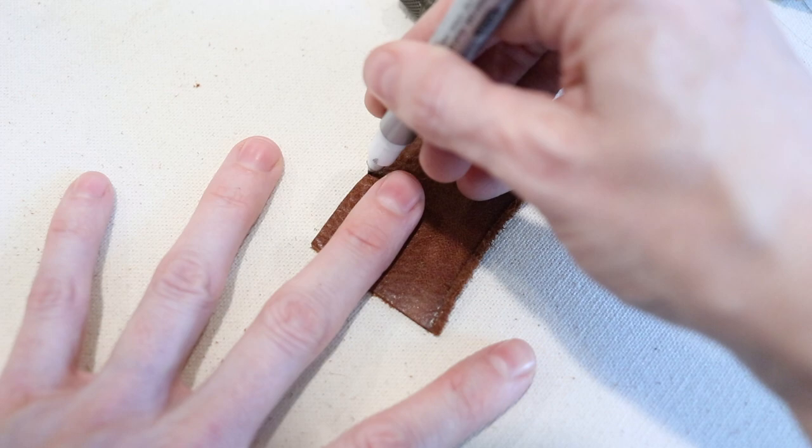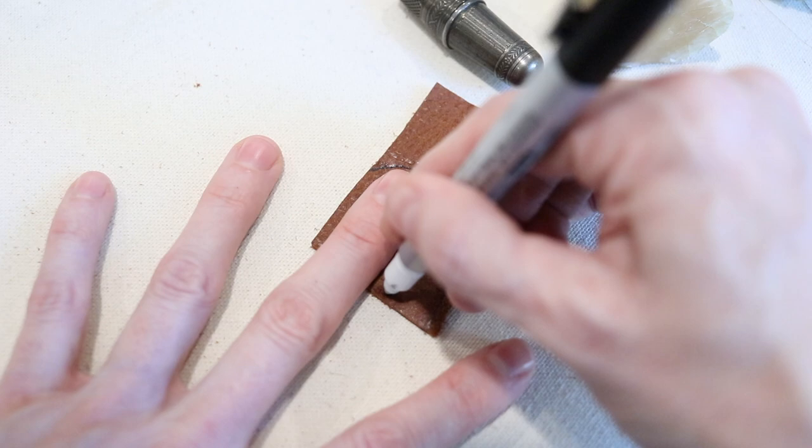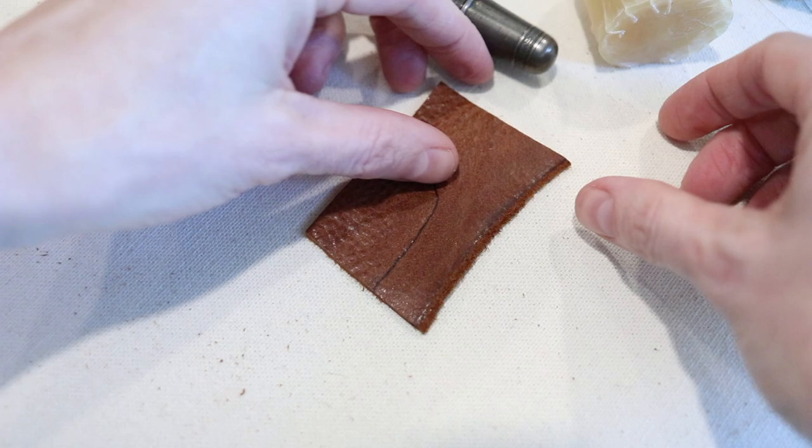Thimbles typically fit down to the first joint from the tip of your middle finger on your dominant hand, so make sure you also mark down a quarter inch from that joint to allow room for stitching the tip of your thimble. Doing this will make sure that it's long enough for your finger.